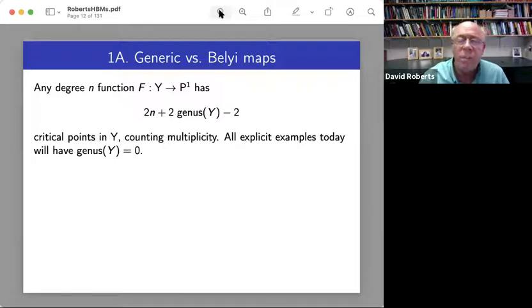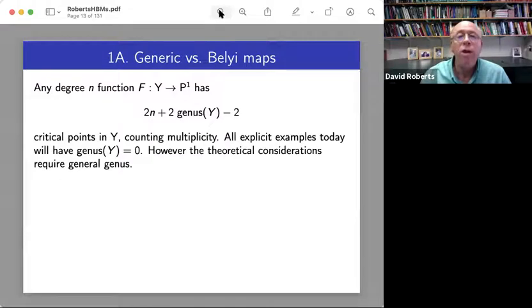And the total number of critical points is given by this famous Riemann-Hurwitz formula. And just so you're not thinking too abstractly, I'm going to have five explicit examples today. And all of them, the upstairs curve will have genus zero.